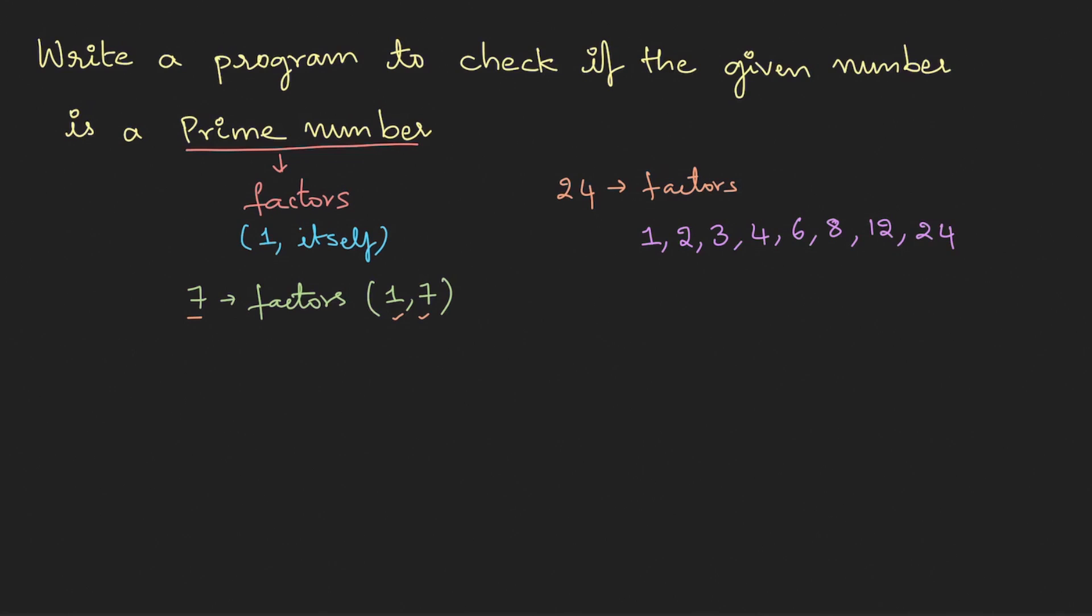So these are the factors for 24. Now if you look at the factors for any number, there are two numbers always constant: one is the number 1, the other one is the number itself. Now other than these two, if anything else is there then it is not a prime number.